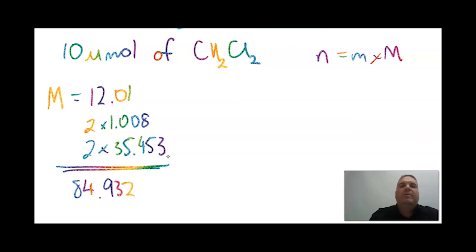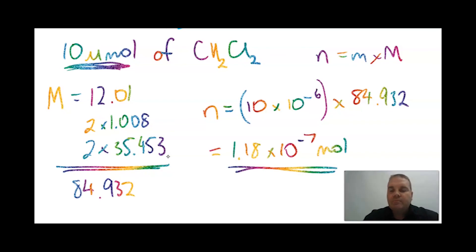That's fairly straightforward. What might stump you though is this 10 micromoles. To calculate number of moles we've got 10 micromoles. Now micromole is 10 to the minus 6 moles - you've got millimoles which is 10 to the minus 3 and micromoles which is 10 to the minus 6, and you could end up going to nanomoles which is 10 to the minus 9. But micro here is 10 to the minus 6, so when you multiply that by the molar mass of 84.932, you get 1.18 times 10 to the negative 7 moles. This is a really small value, a sort of thing you'd find when you're doing really small injections of something.